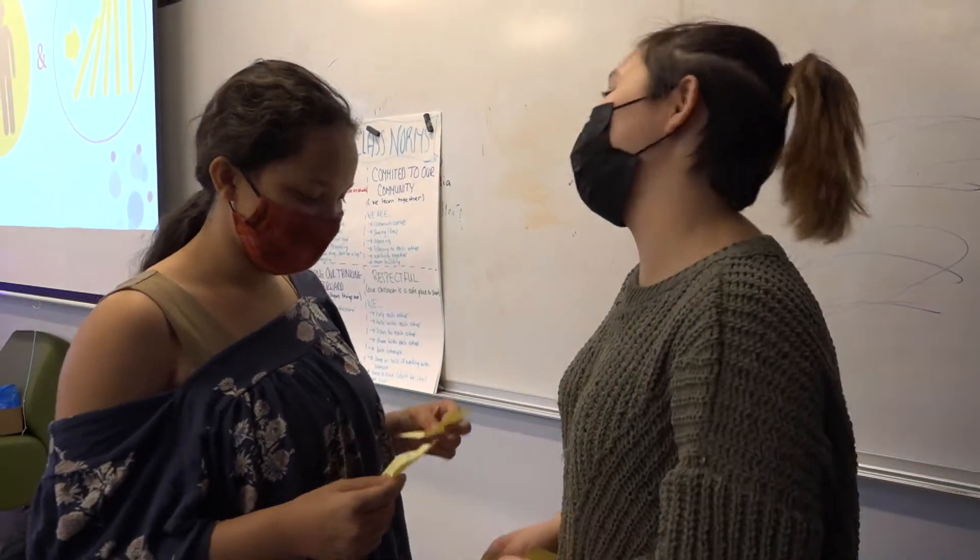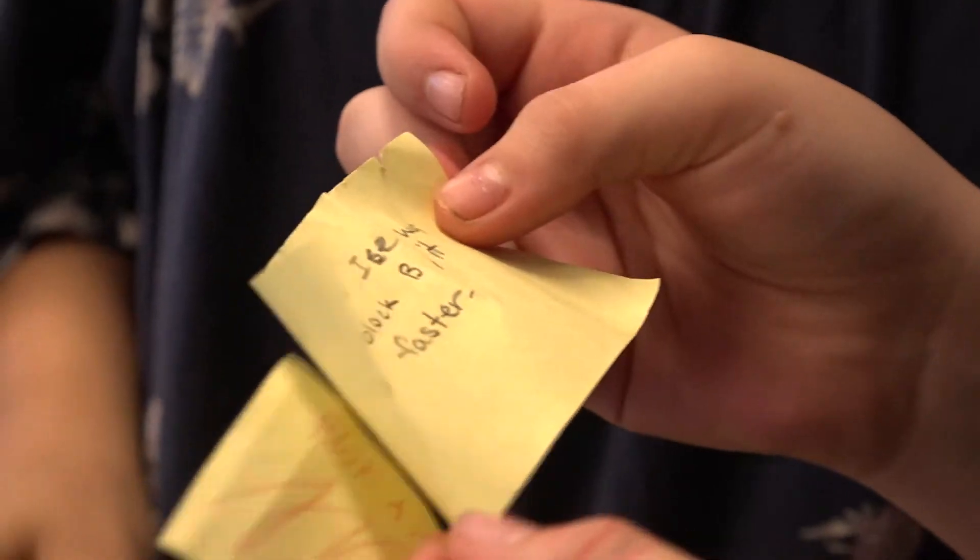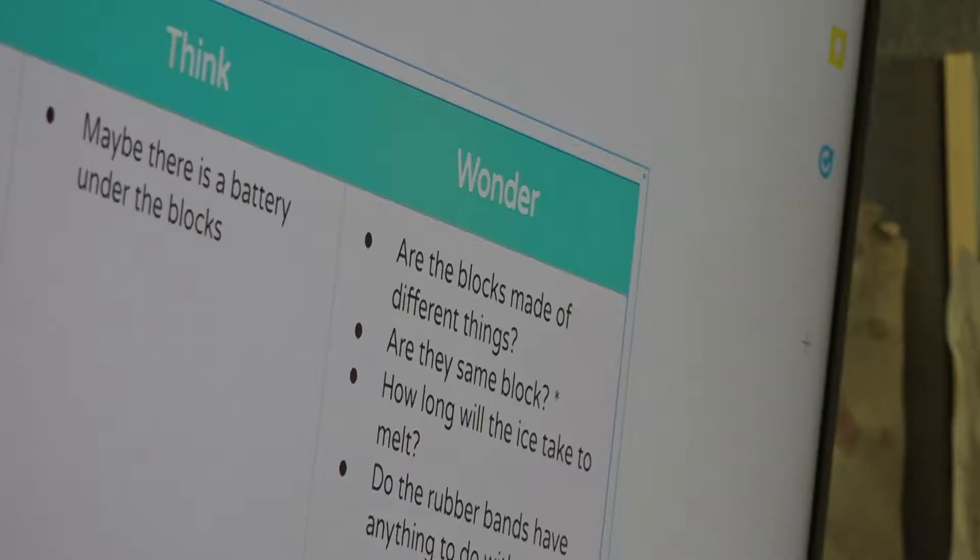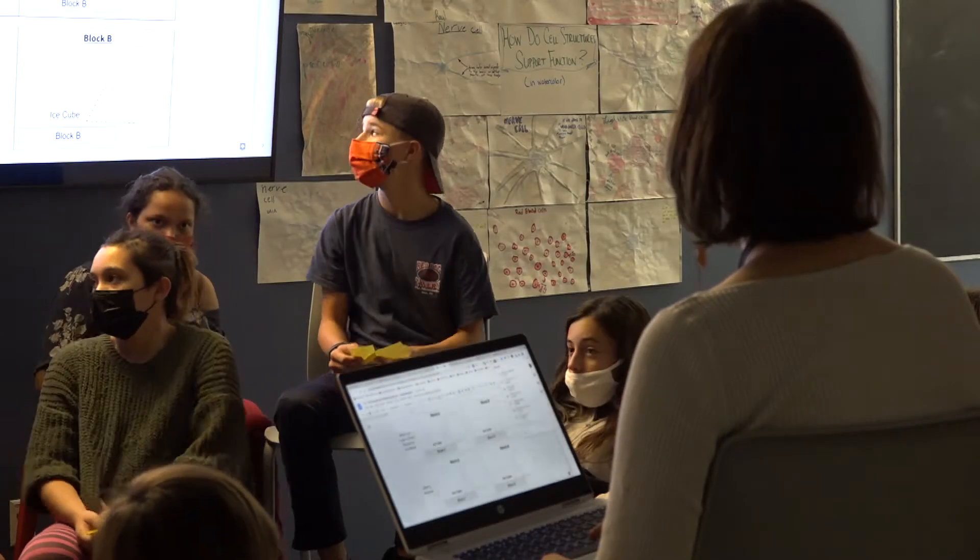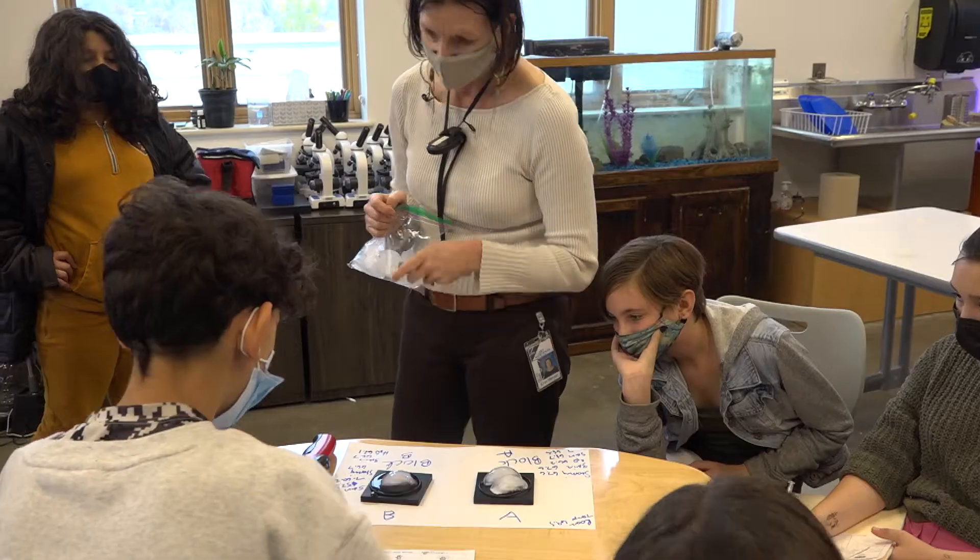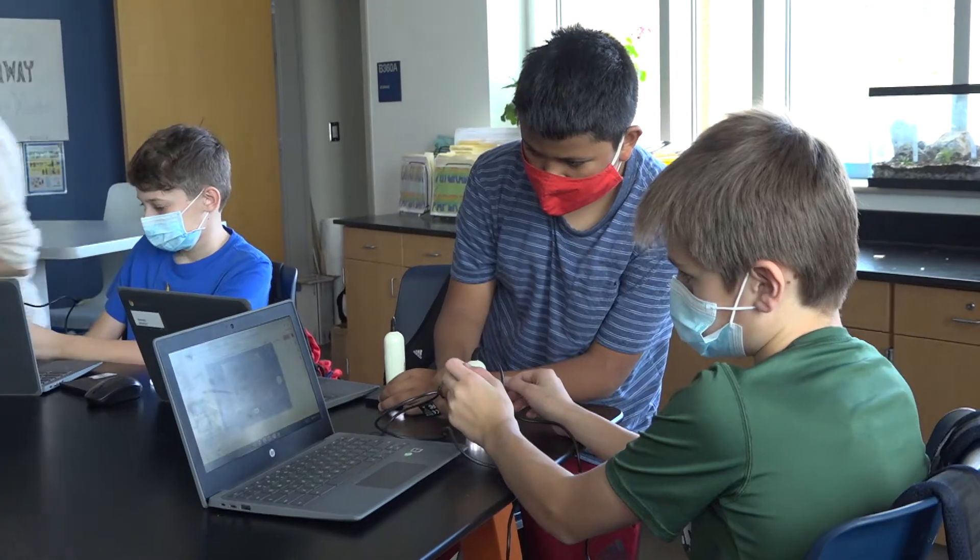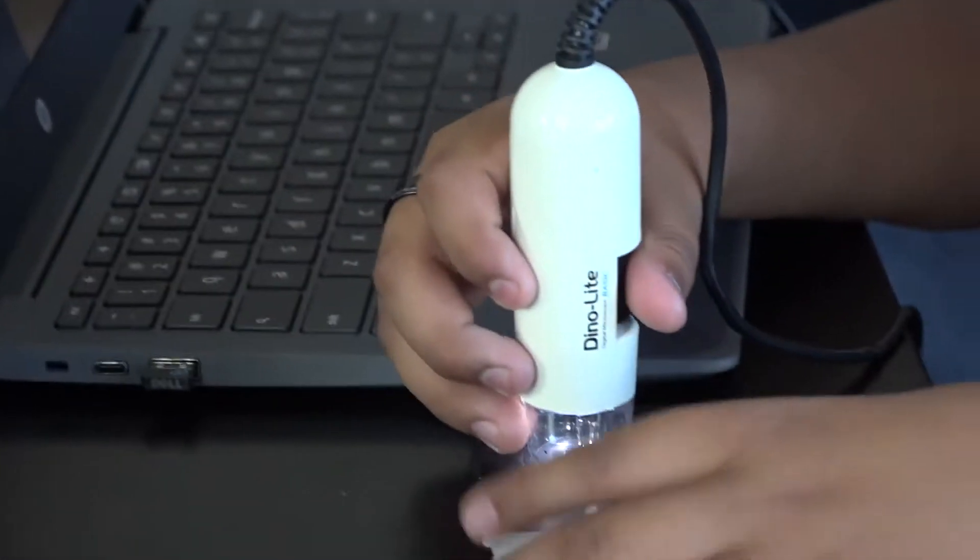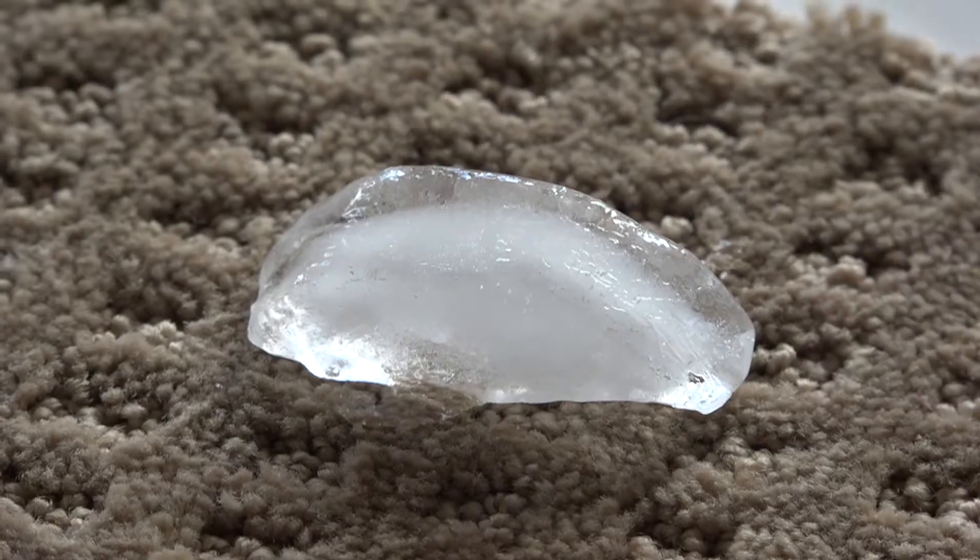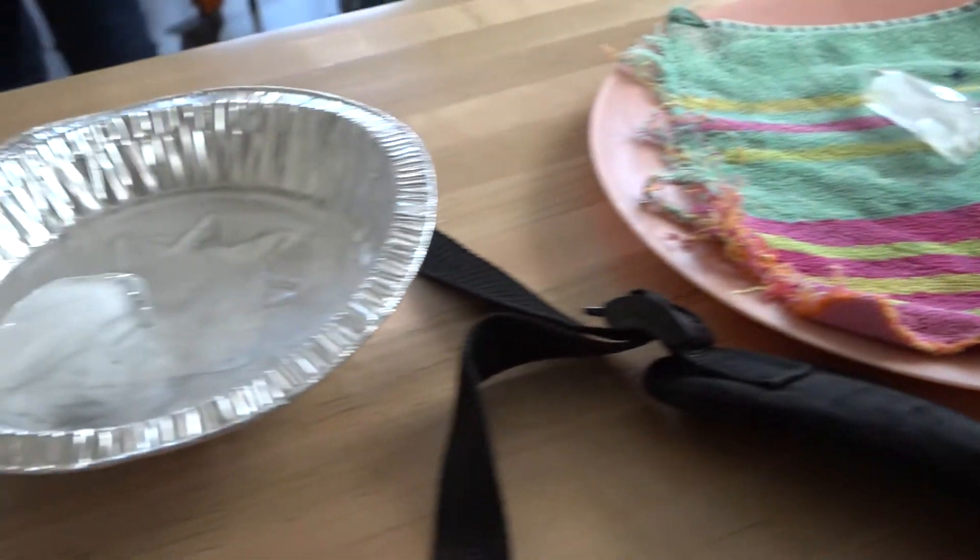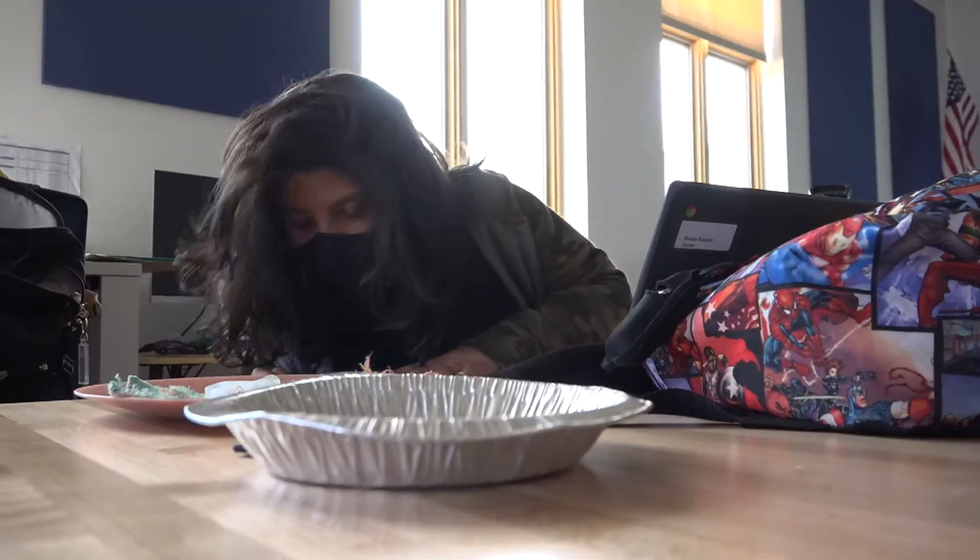A key part of the process is collaboration, so students gather together to share what they've seen and perhaps most importantly, their questions. The result is that students are highly engaged as they themselves seek answers using the scientific method. Today they're following up on one of their hunches that ice interacts differently with different materials. To test the theory, they collected a variety of household items to see how ice melts on them.